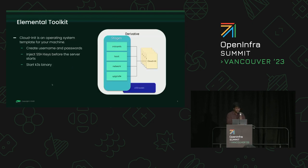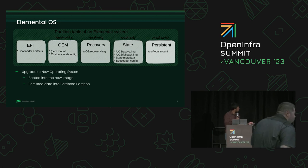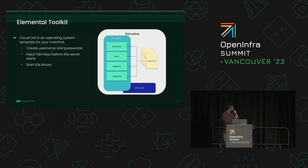The interesting part is that the toolkit converts this OS container image into a bootable OS container image, so you can boot into bare metal, cloud, or virtual machines. The toolkit also takes cloud init config files as arguments. Cloud init config files are like OS templates — for instance, pre-creating usernames and passwords or injecting SSH keys when the OS boots.